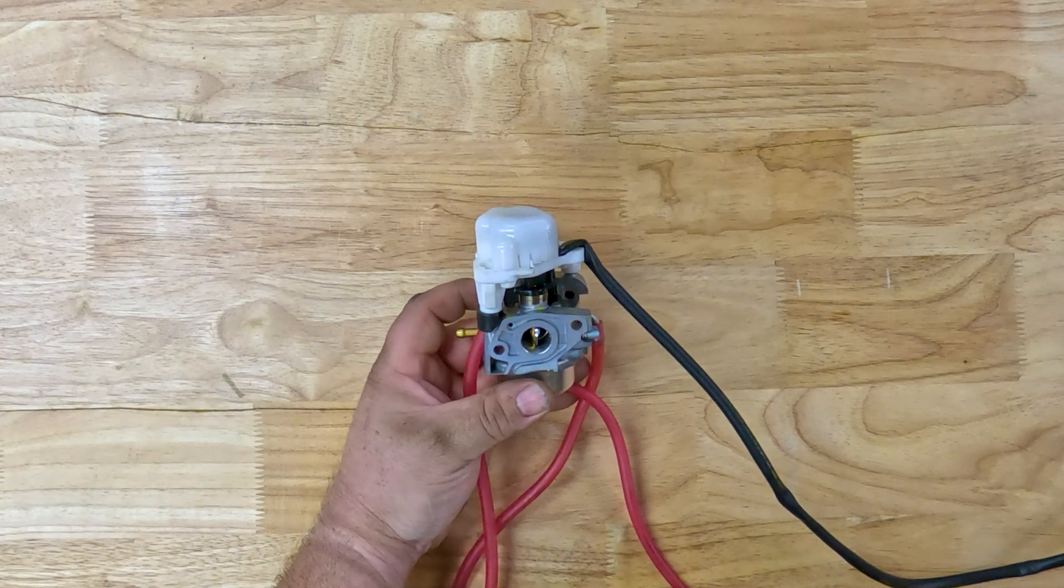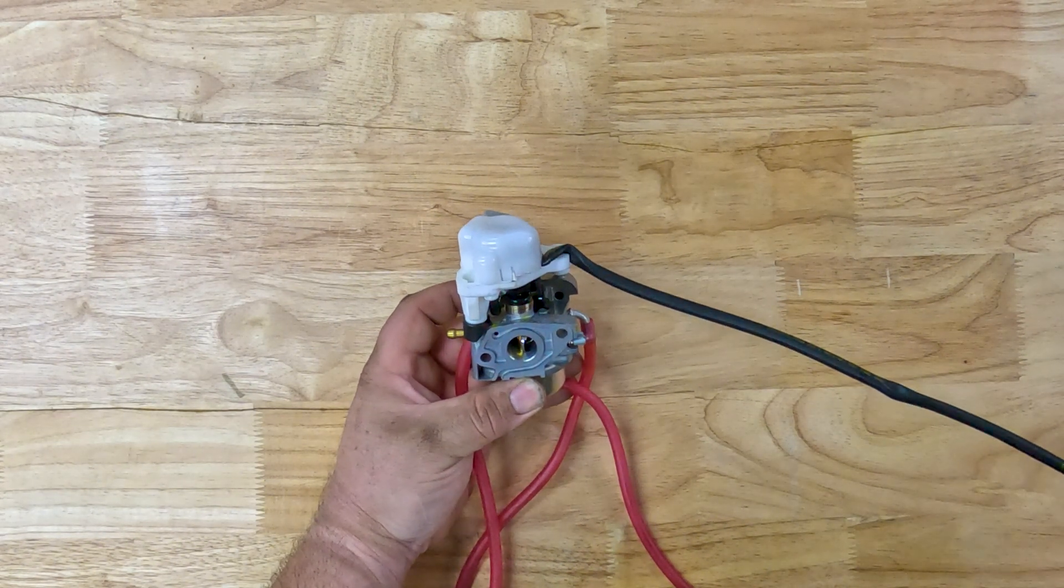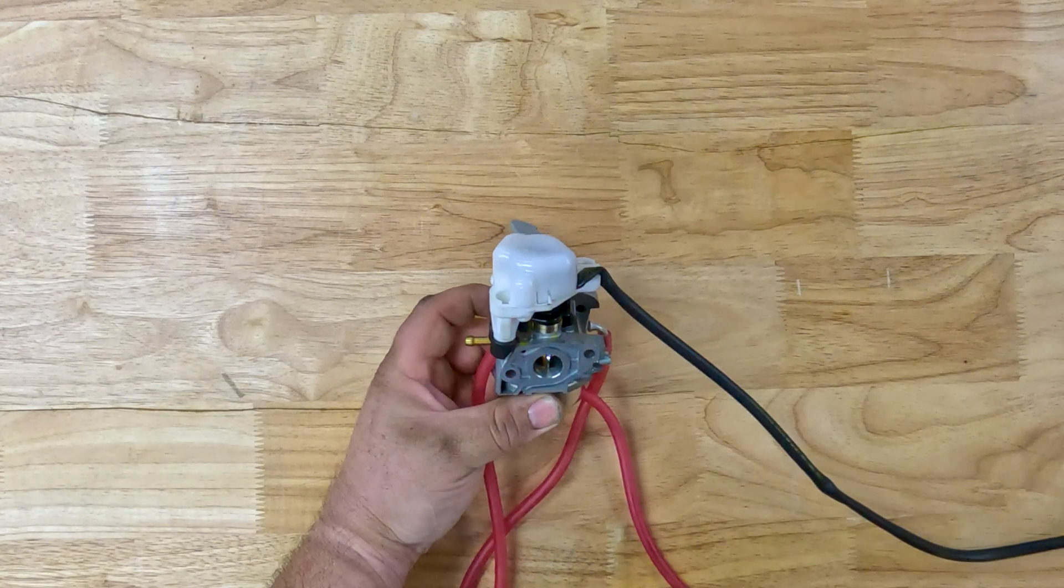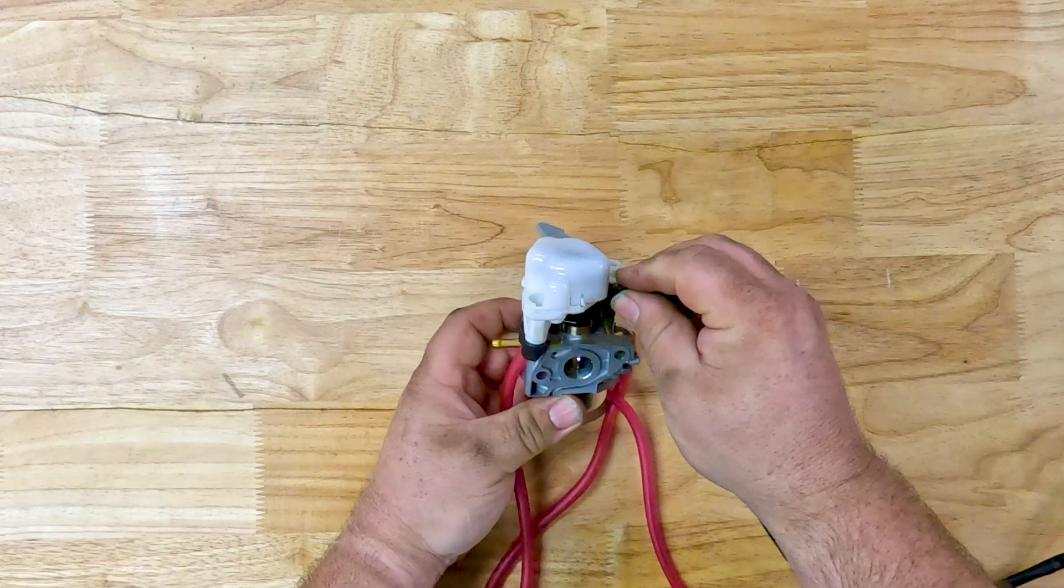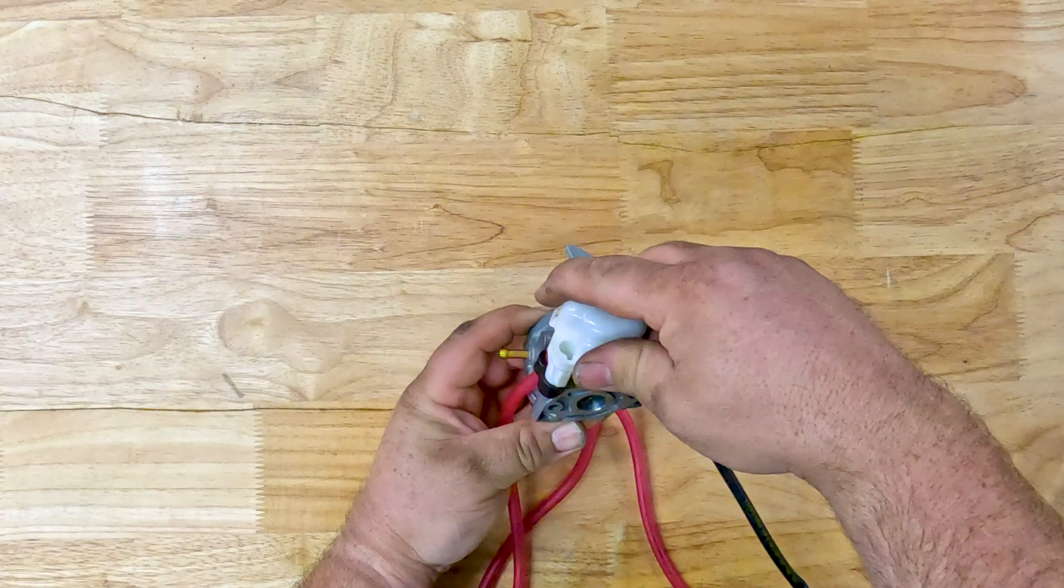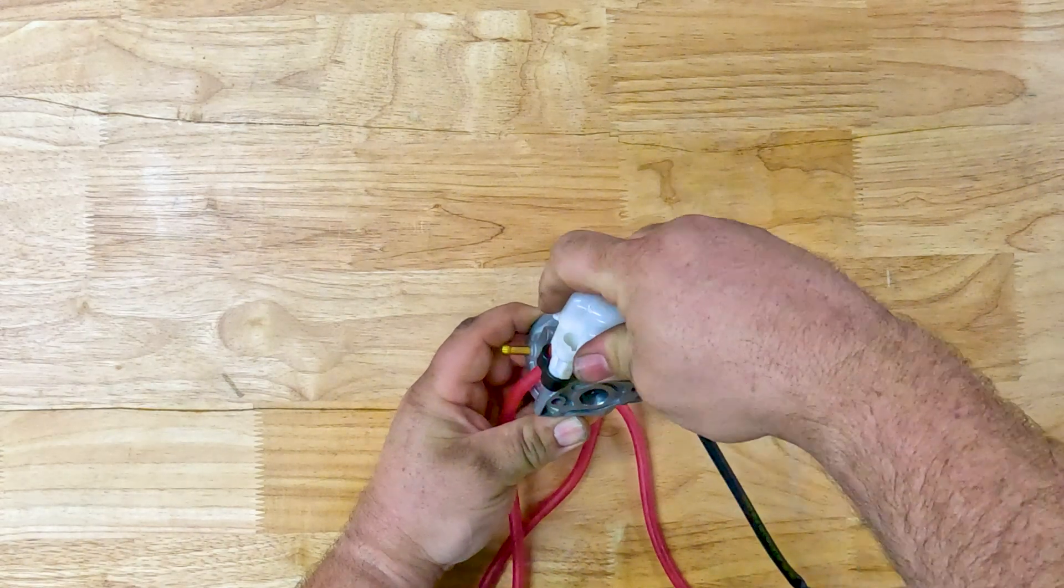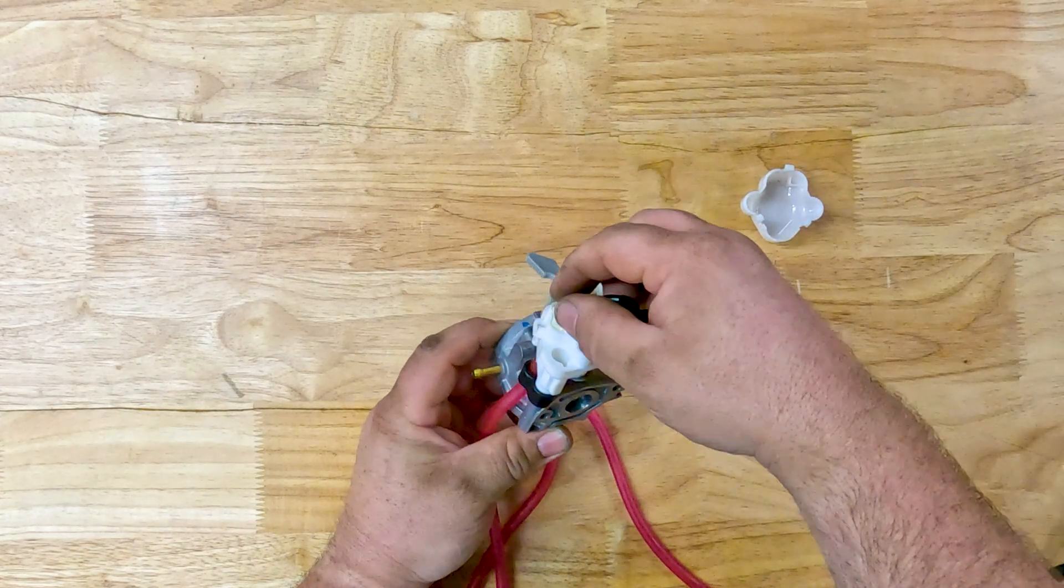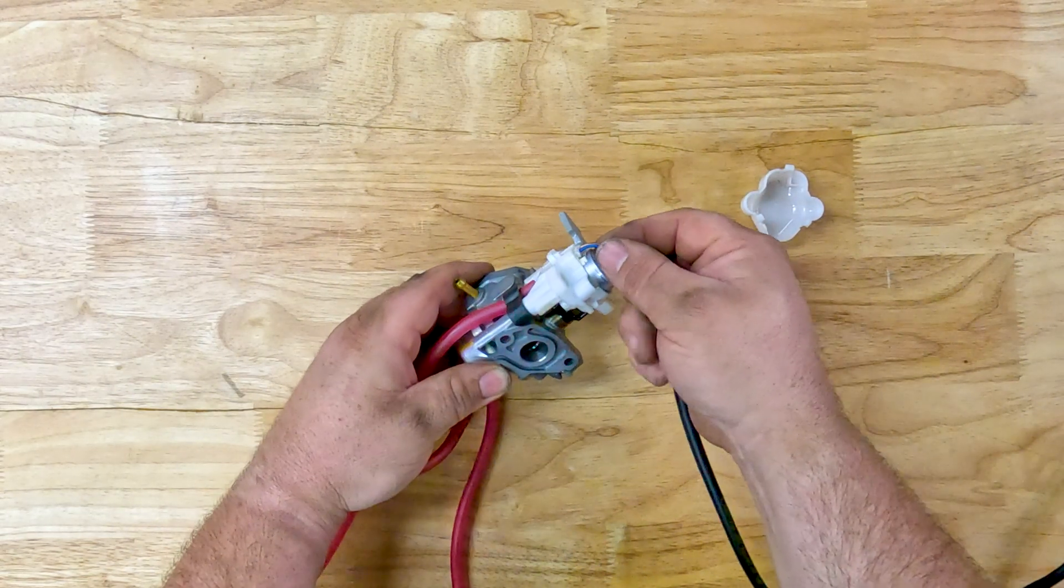When removing the carburetor from the generator, you will still have this wire attached to the generator which is for the electric motor on top of the carburetor which controls the throttle. To remove the wire from the carburetor, this top protective cover, just squeeze the sides in, and that will just unclip, and this little plug here will just pull straight out.